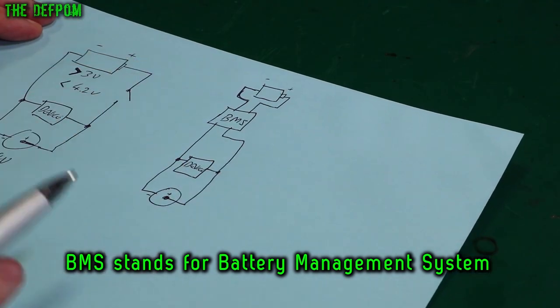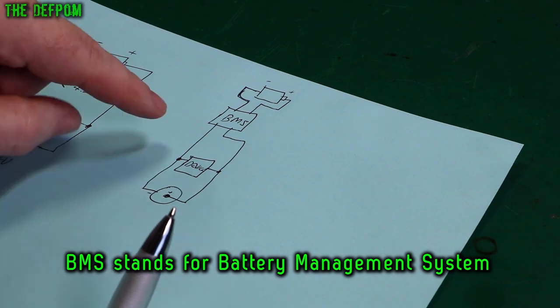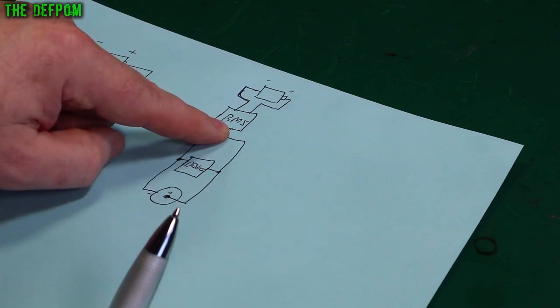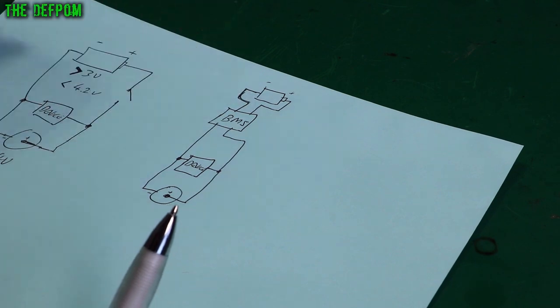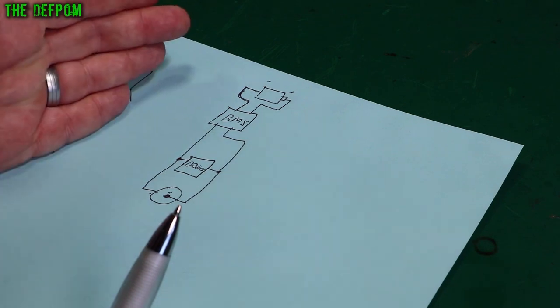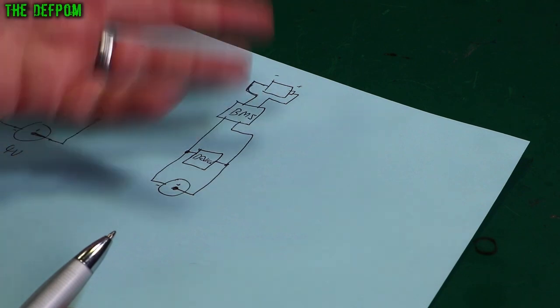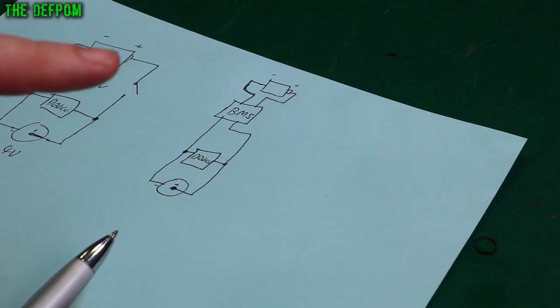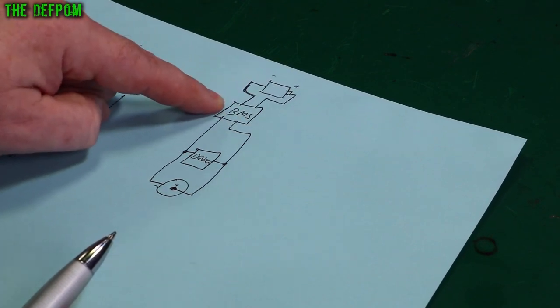So here's just a quick diagram of a typical BMS system. This is one method of doing it, not necessarily the best way. There are other ways. Here's a BMS in between your battery and your device and your charge point. So you can charge this up, and the BMS will regulate the voltage and only give the battery what it needs.